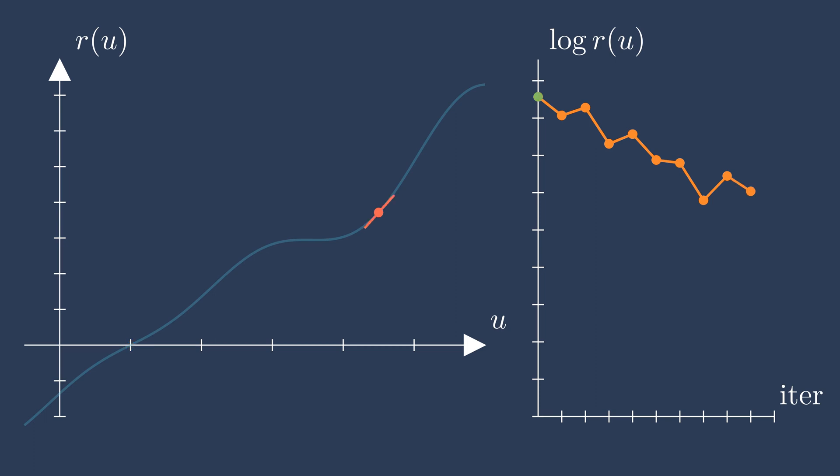What if we use the slope, also known as the derivative or the gradient, to inform the next guess? Using the slope, we can draw a line tangent to the current guess that linearly approximates the residual function.